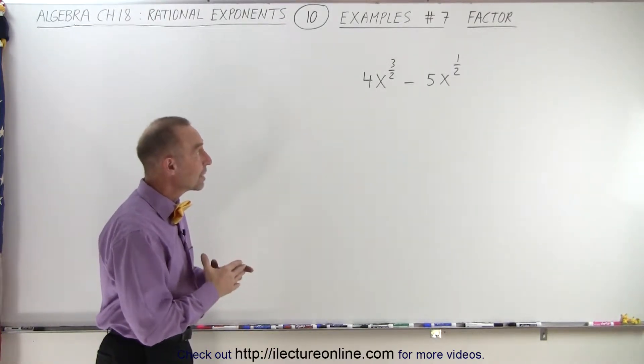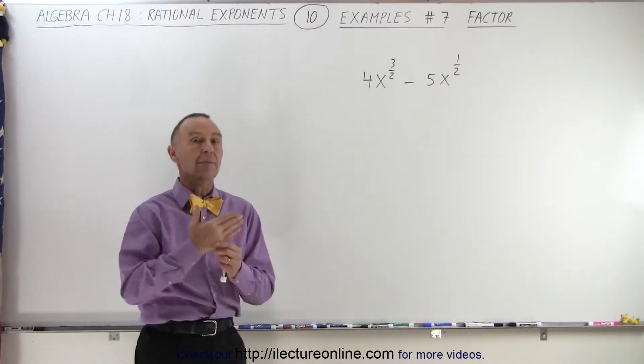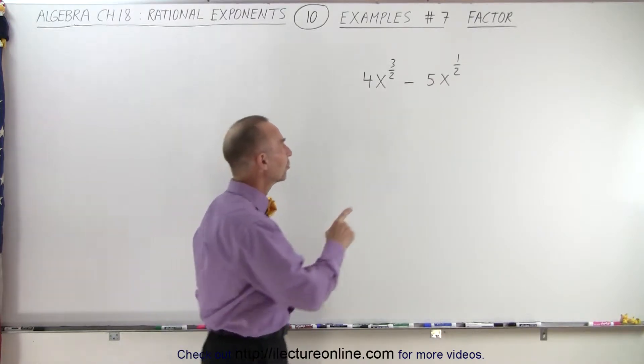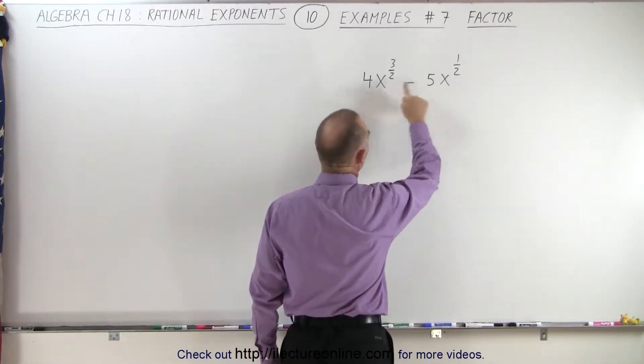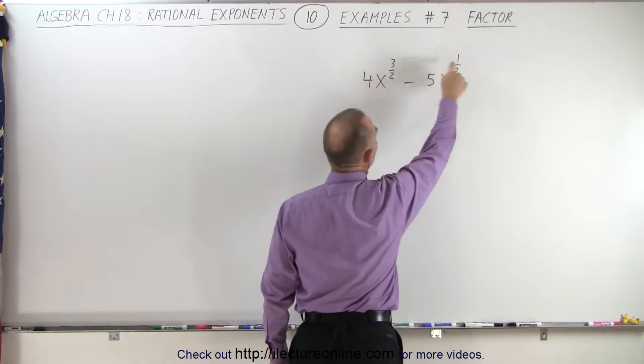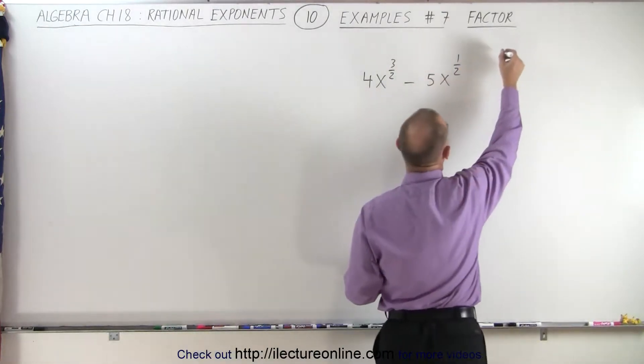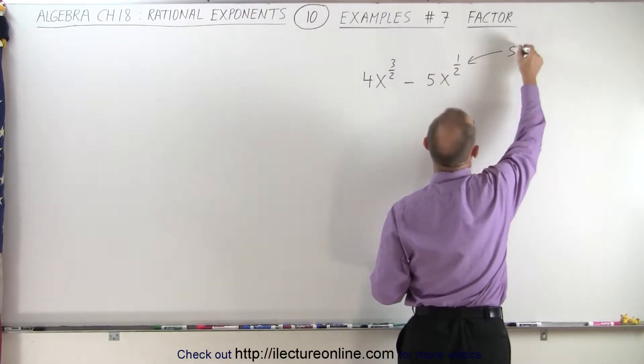What we're asked to do here is to factor out a common factor from this binomial. So how do you do that? Well, it turns out what you must look for is to make sure you have a common base, and then you look at the exponents and find the smallest exponent, and the 1 half is the smallest exponent.